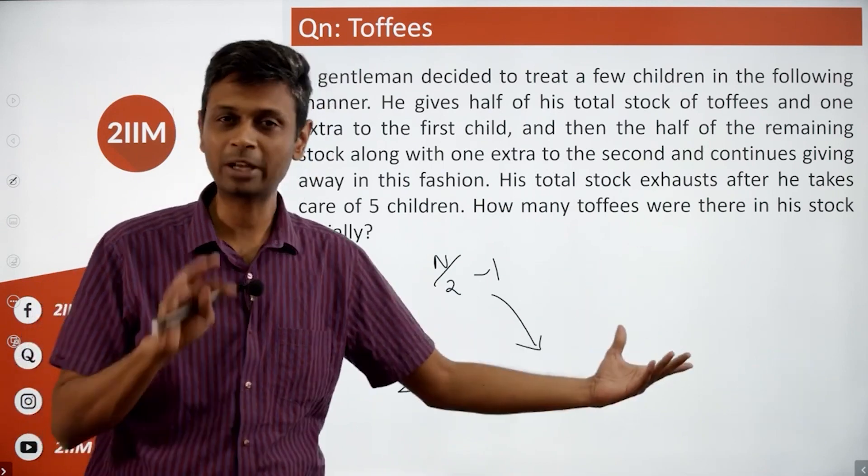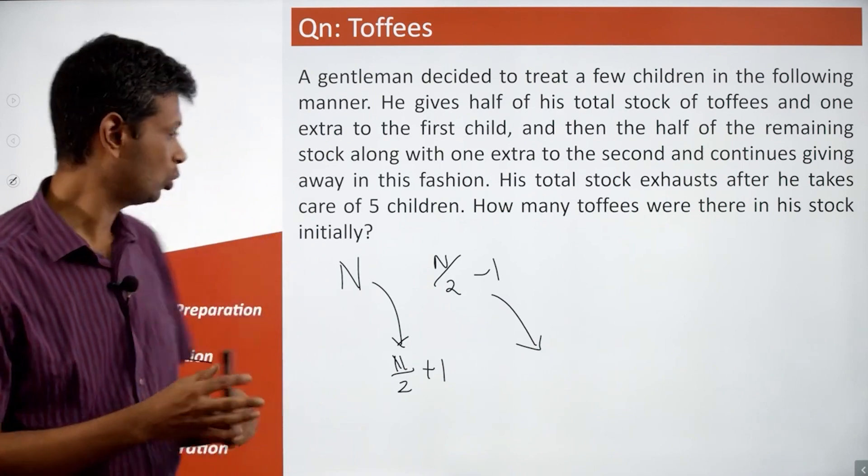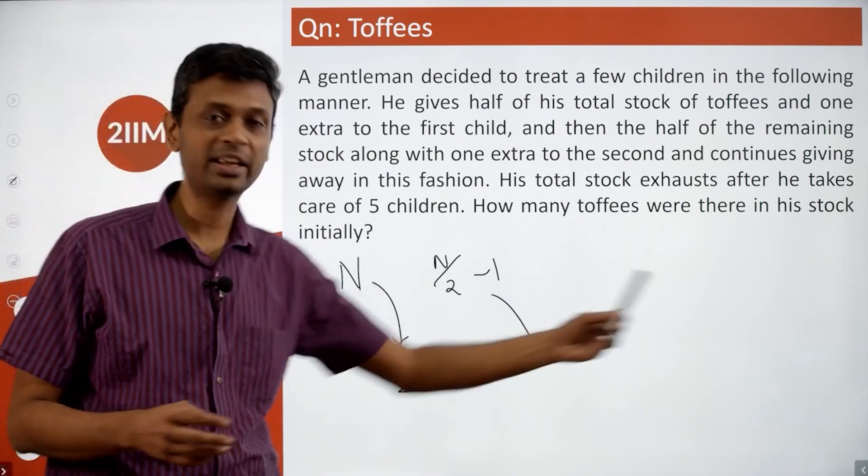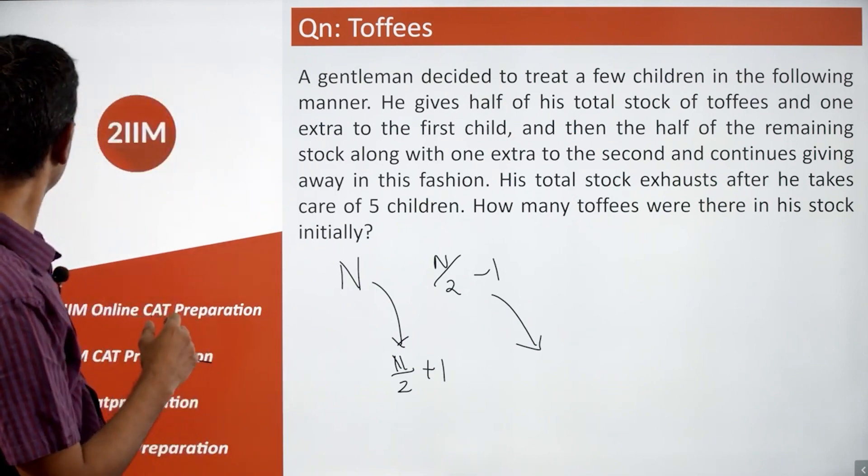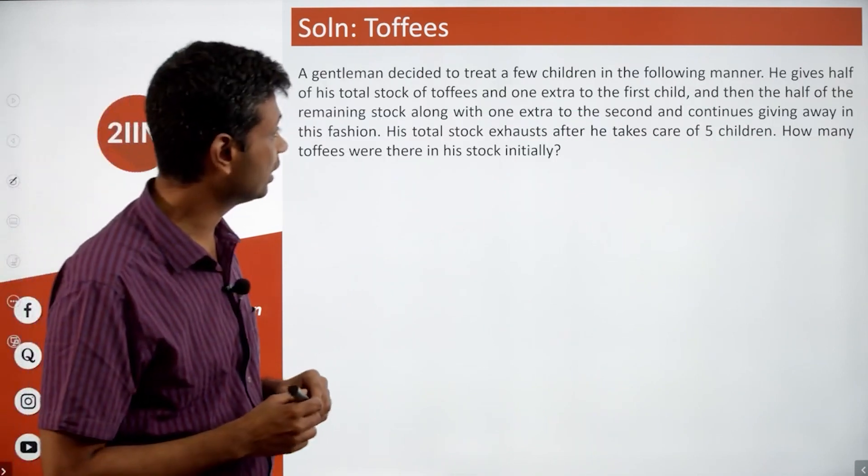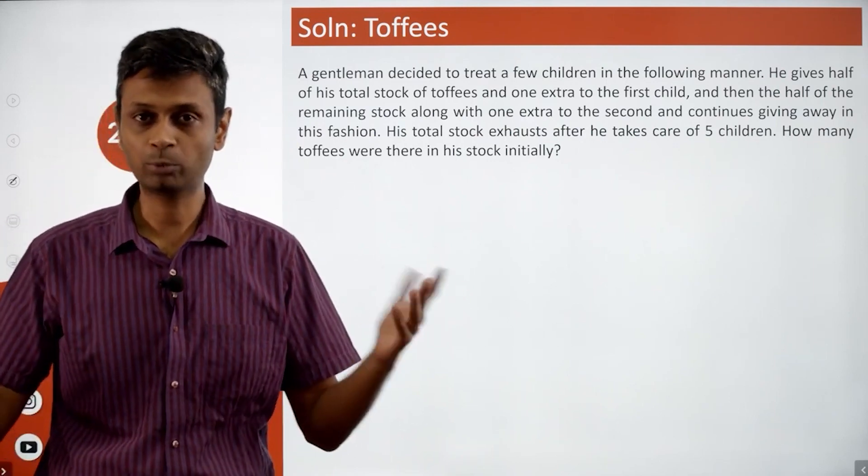These kinds of questions, one very simple rule: don't start from the first child till the end. Start from right to left. We know that the last child gets half plus one extra, and at that time he runs out.